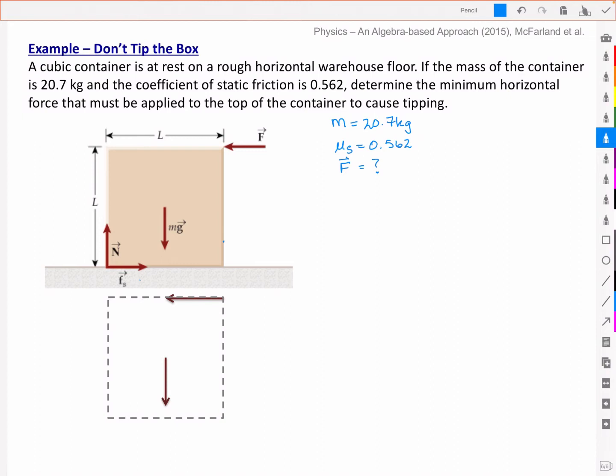The second thing that I might do instead is to apply the force high up at the top like here, and if that force is less than the maximum force of friction then it won't slide. I won't have sliding but I might still get tipping and that's what it's really asking about here. What's the minimum that must be applied to cause it to tip?